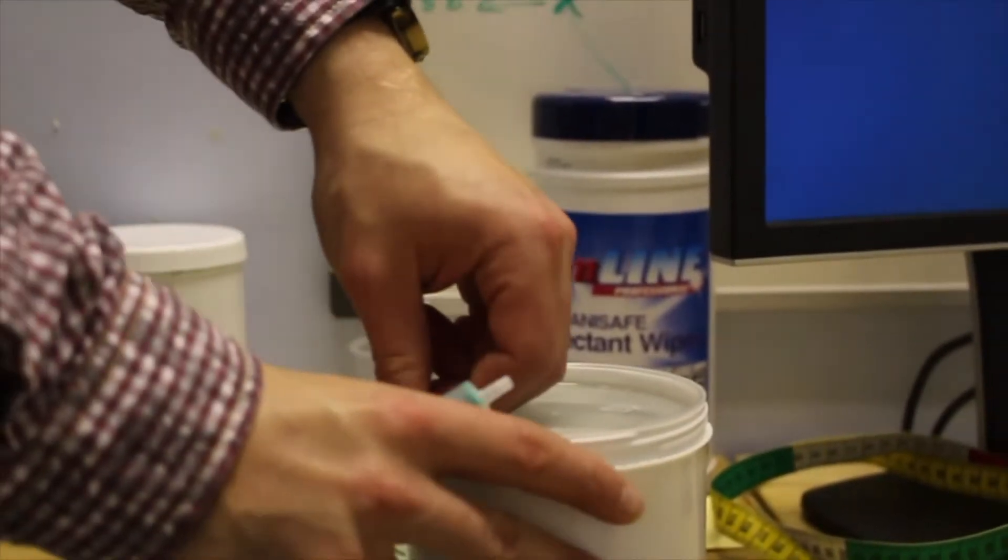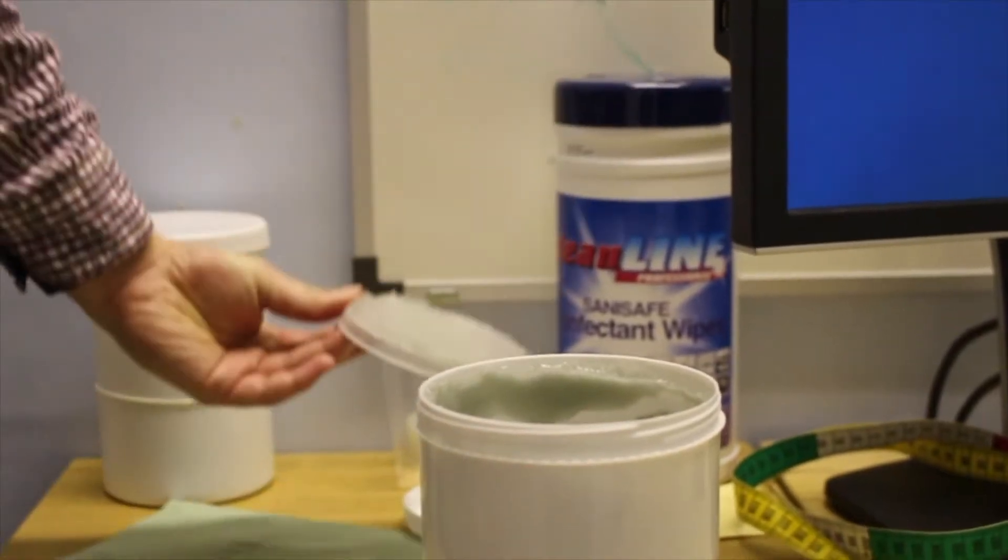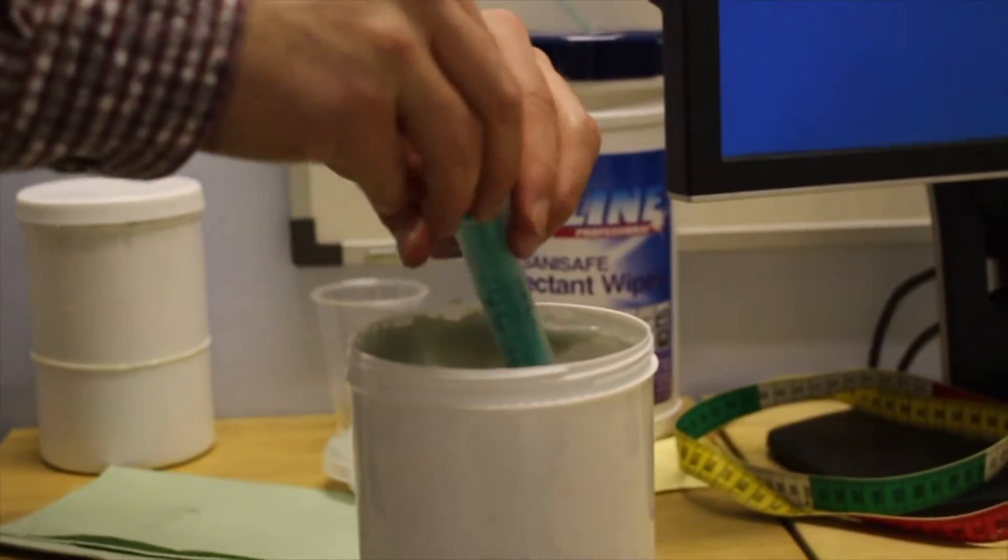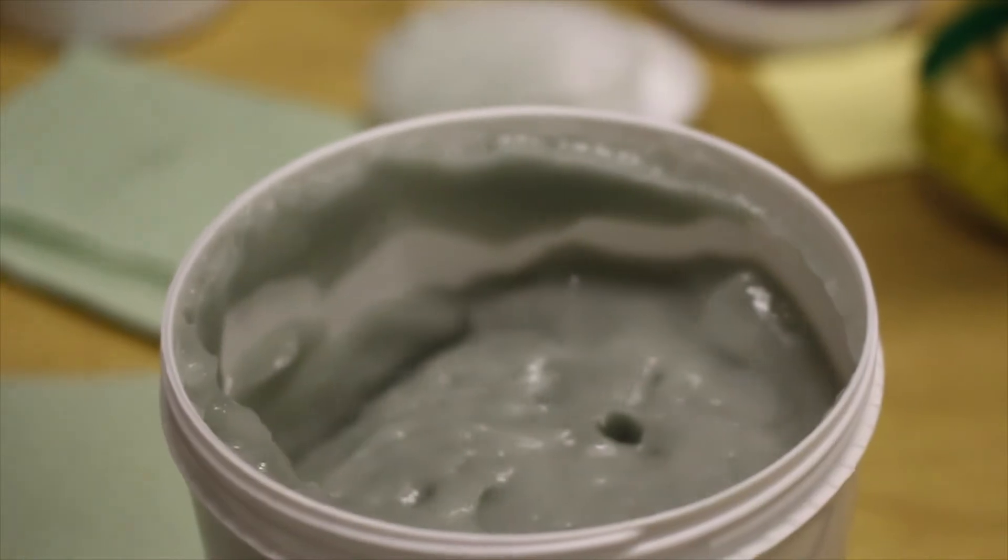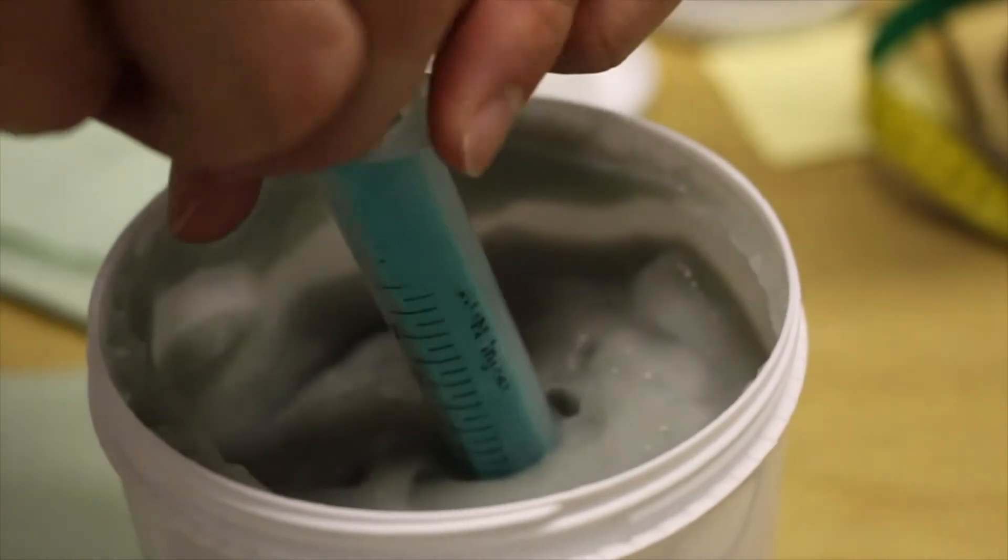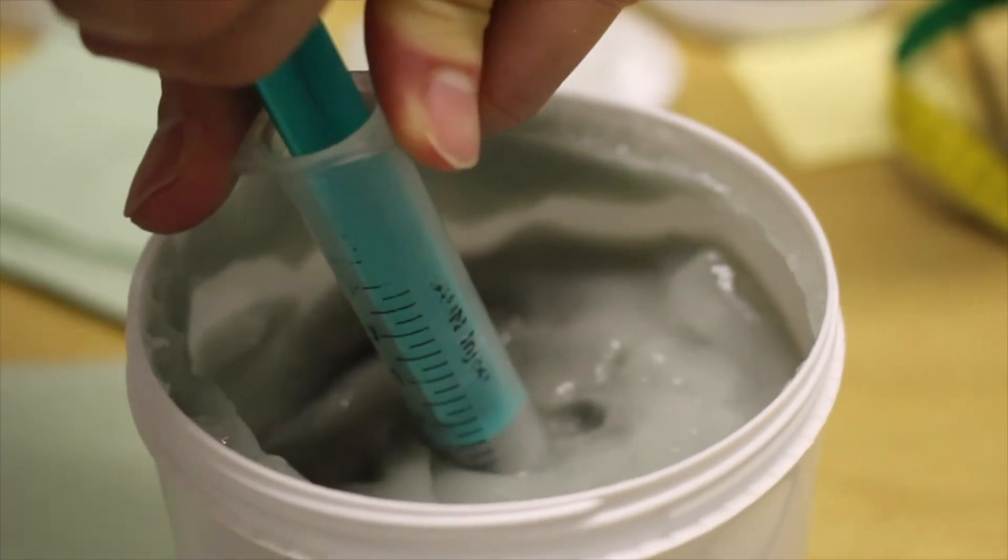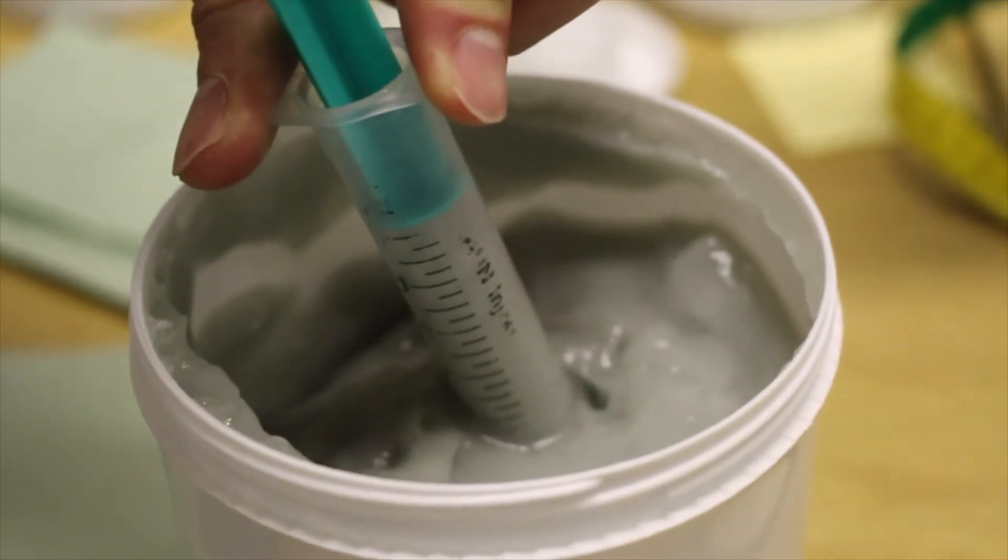Now you can begin filling the electrodes on the cap with gel. Take a clean syringe and fill with the gel. Try to avoid creating any air bubbles in the syringe. You might want to fill two or three syringes to avoid having to go back and refill.